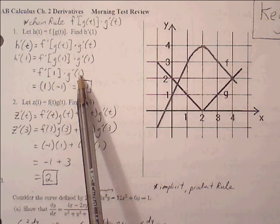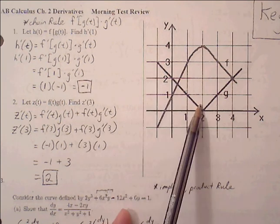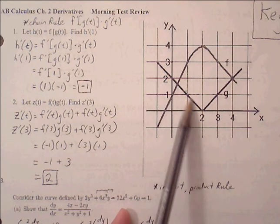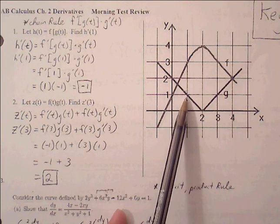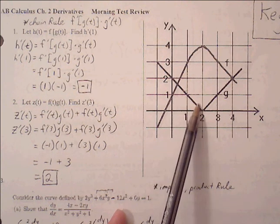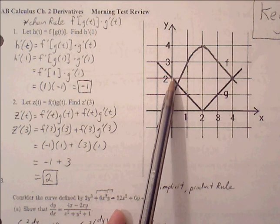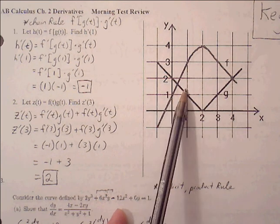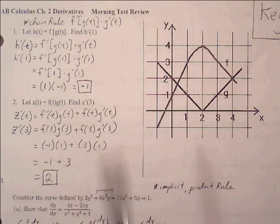G prime of one — we're asking for what is the slope of the g graph at one. Notice that this is a straight line, so whatever the slope is at any point on this line will be g prime of one. If we just pick two points, this is down one over one, so a slope of negative one. So one times negative one is negative one.